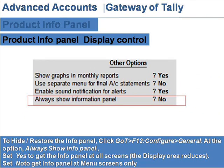Product Info Panel Display Control: To hide or restore the Info Panel, click GOT F12, then Configure, then General. At the option Always Show Info Panel, set Yes to get the Info Panel at all screens — note the display area reduces. Set No to get the Info Panel at menu screens only.